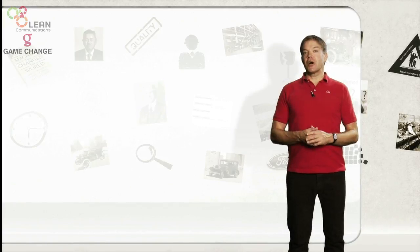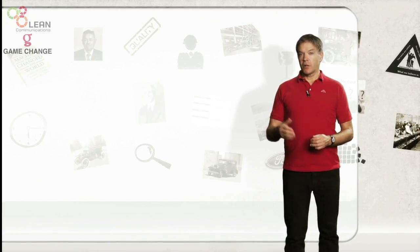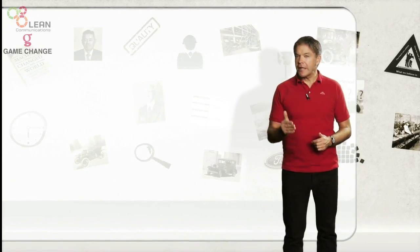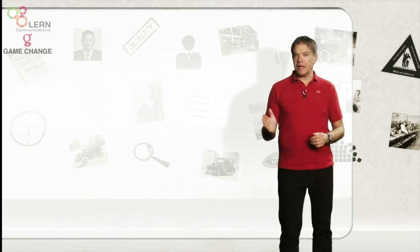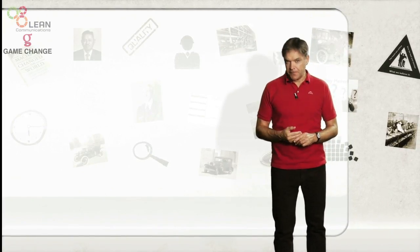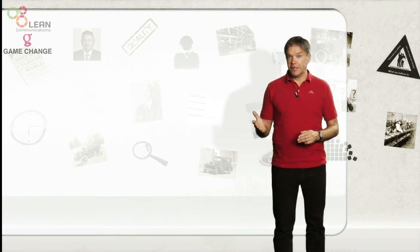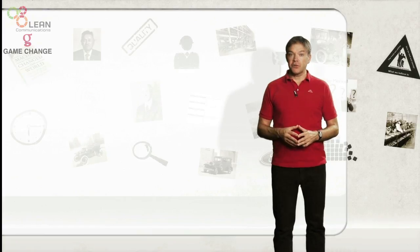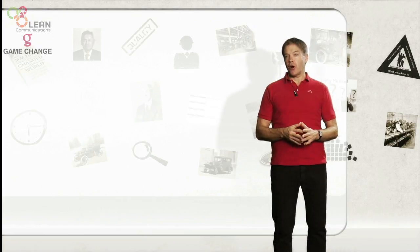An average company operating at around 3.5 sigma will typically spend around 20-30% of its revenues resolving and fixing internally generated problems. A six sigma service company's cost of poor quality is less than 5%. What is your organization's cost of poor quality?